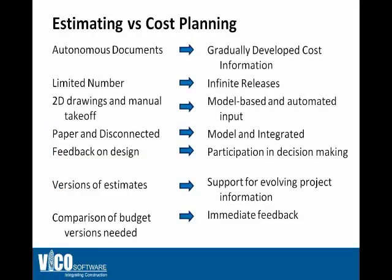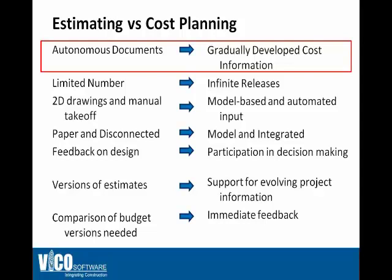We call the cost calculation module Vico Office Cost Planner because it really enables a different process — we call it 5D cost planning. The 2D estimates are typically created as autonomous documents where one estimate is created per phase, and there's no real connection between versions, making cost variance between two versions a difficult process to identify. With 5D cost planning, the cost plan is developed gradually, and you replace line items one by one, maintaining the previous assumption or allocation and providing immediate feedback.